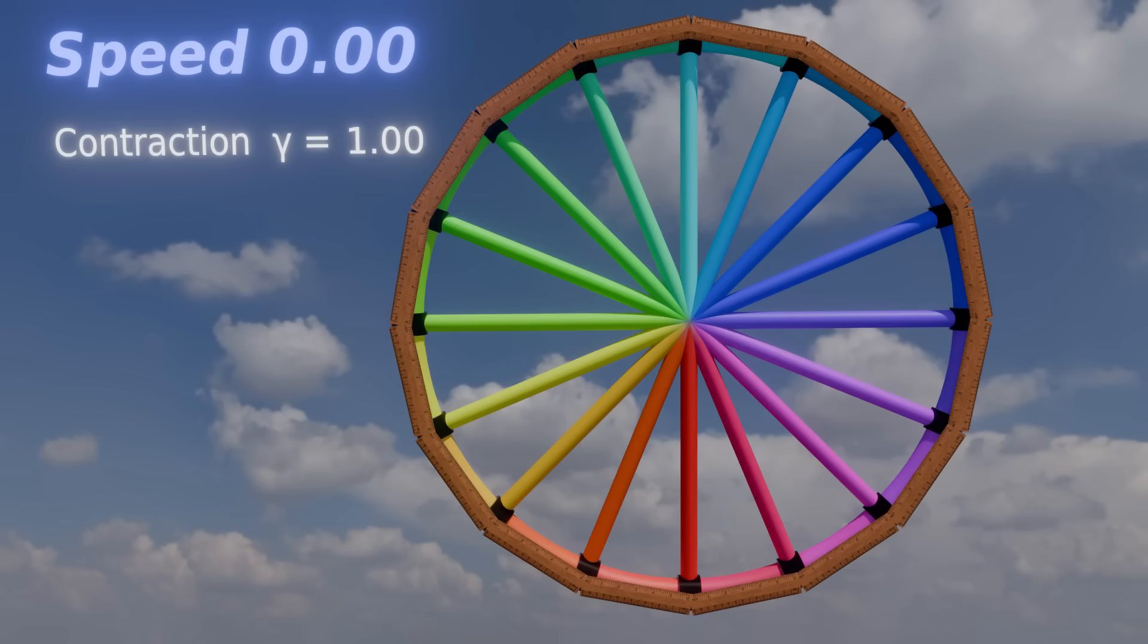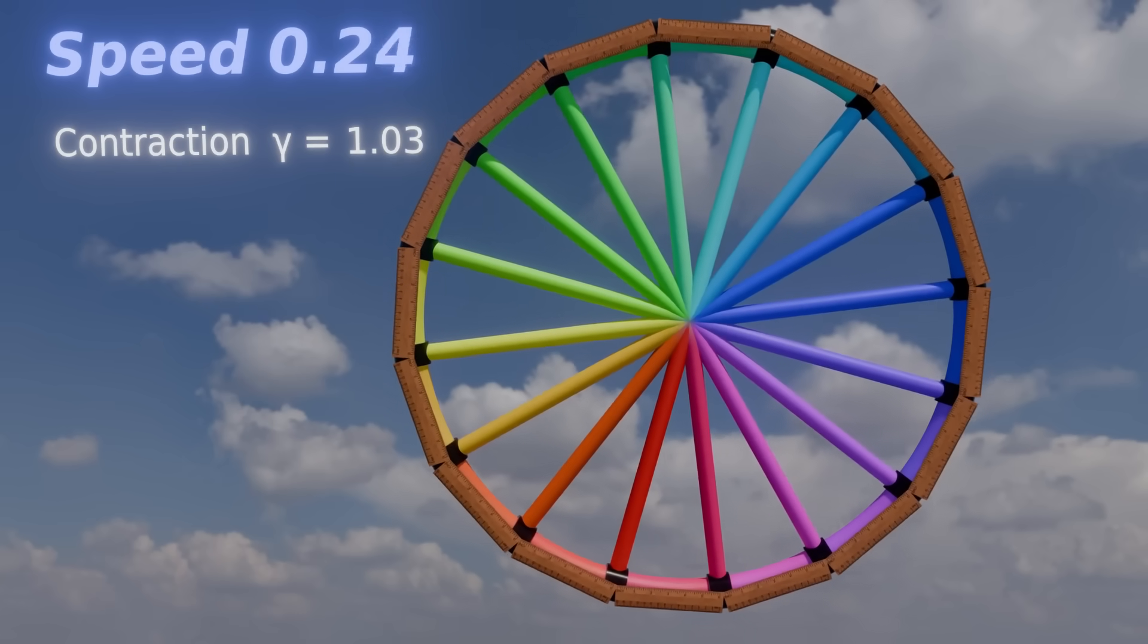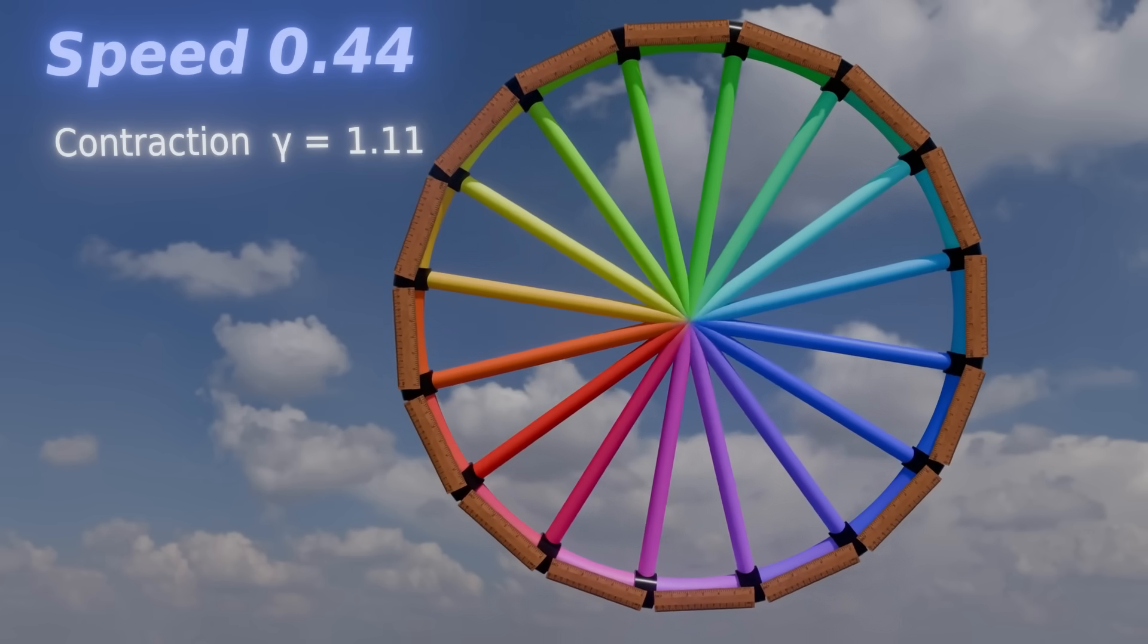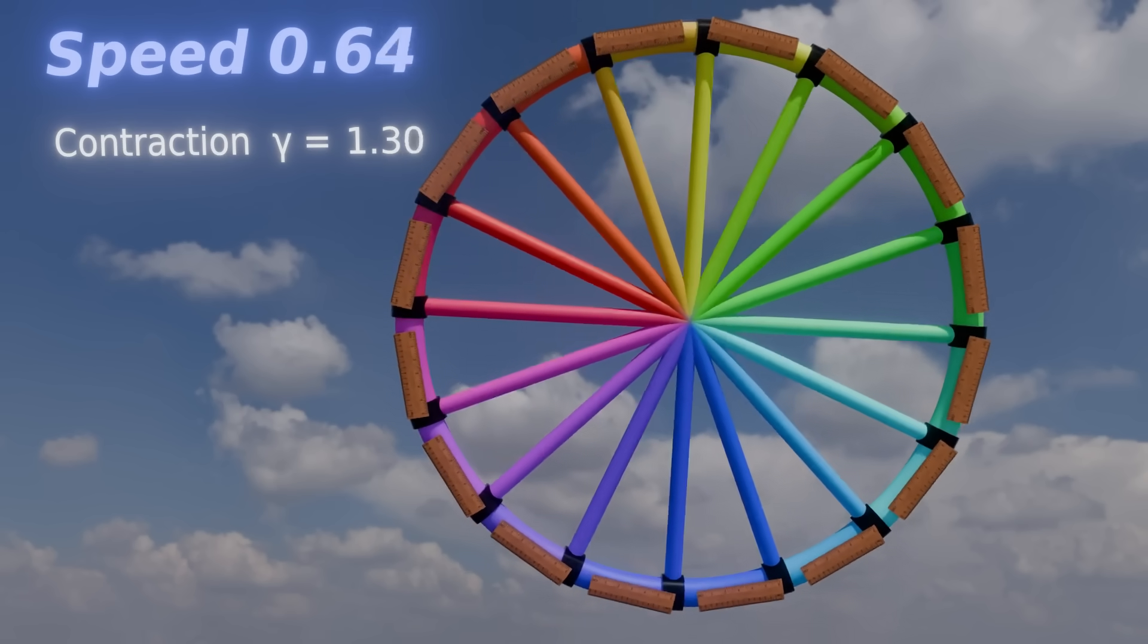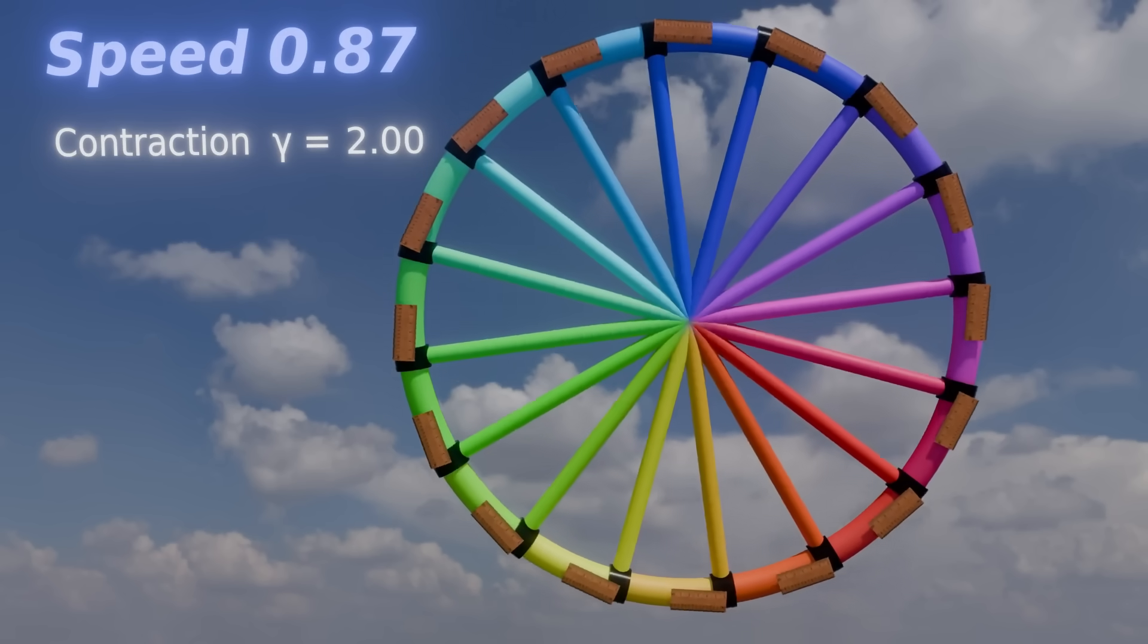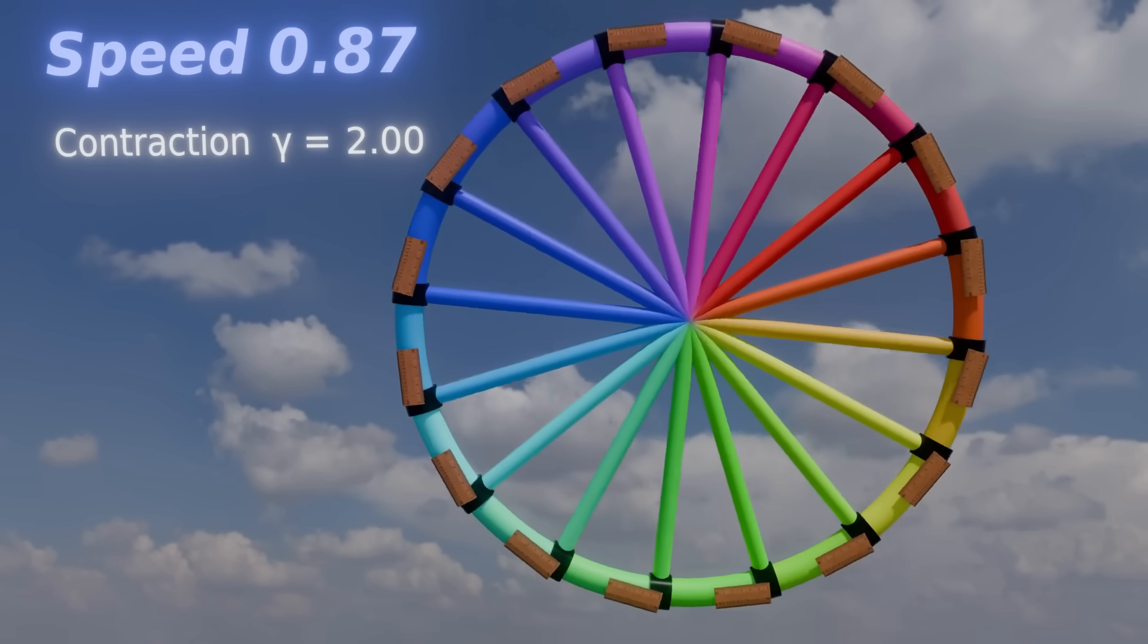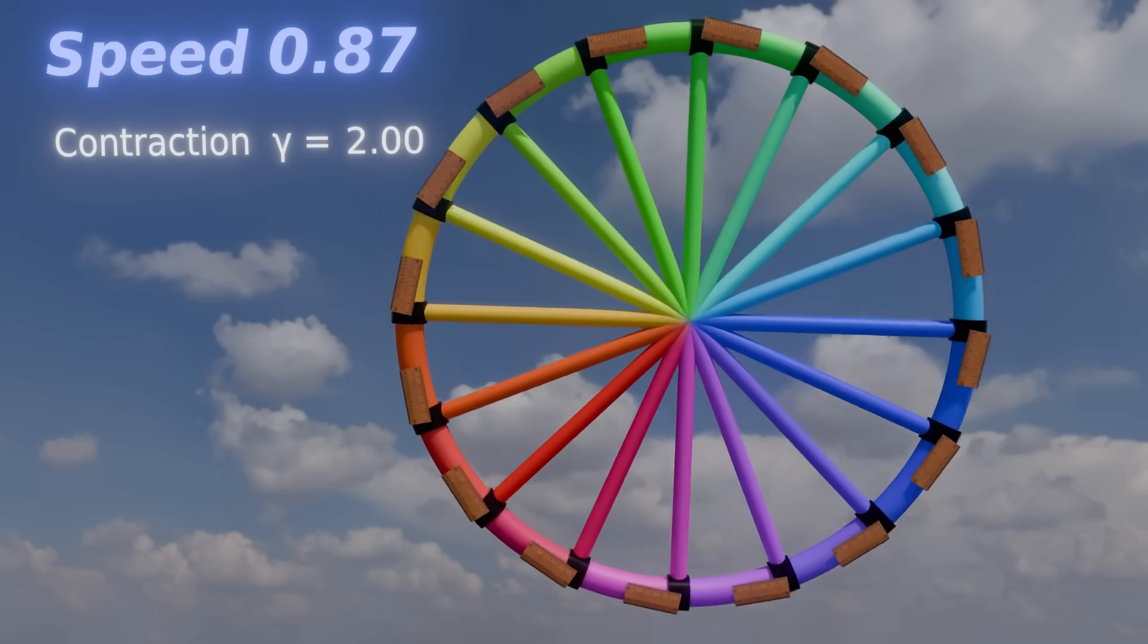Here is another way to see it. Let us attach measuring sticks along the circumference of a stationary circle. Then, let us put the whole thing into rotation. The measuring sticks, having tangential velocity, must exhibit Lorentz contraction.